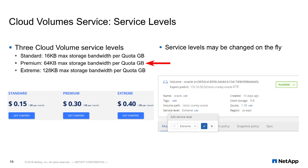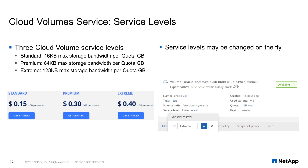Premium is 64K and Extreme is 128K. Service levels may be changed on the fly. Once a change is made, the API will go and change the service level in the background, and within moments your capability is either expanded or reduced, depending on the direction you go.